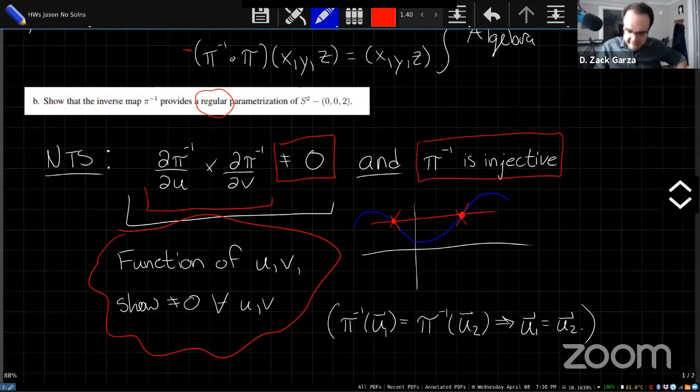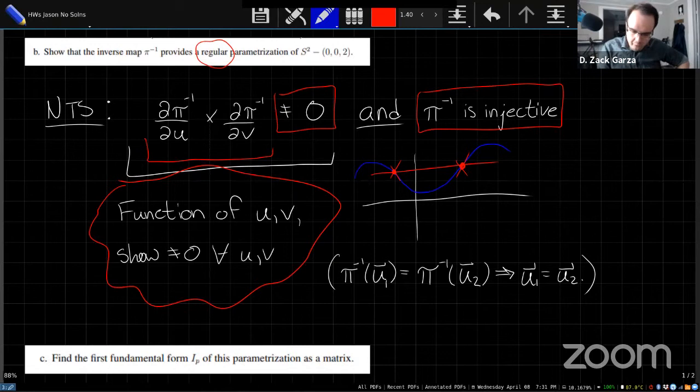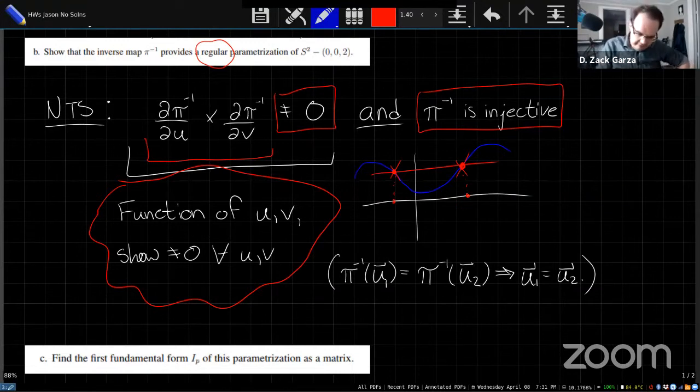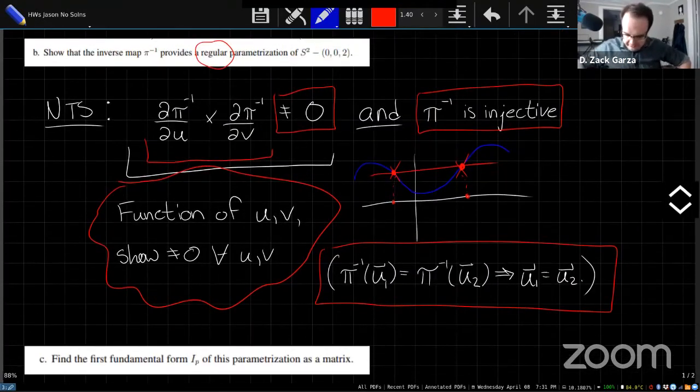And then just remember too that the other part of being regular parameterization is that you need to have injectivity. The way I like to remember this is that it's something like the horizontal line test. If you have one y value that's mapped to by two different x values, that's a failure of injectivity. So what you need to check is that if two y values are the same, then they really did come from the same x value. And that's essentially what this condition is down here. And again, this should just reduce to some algebra.